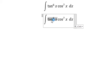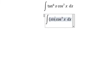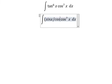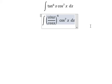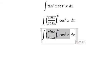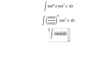For this one, we can rewrite it as sine x over cosine x to the power of 6. Next, we simplify by combining cosine x to the power of 6 with cosine x to the power of 7. We get cosine x multiplied by sine x to the power of 6.